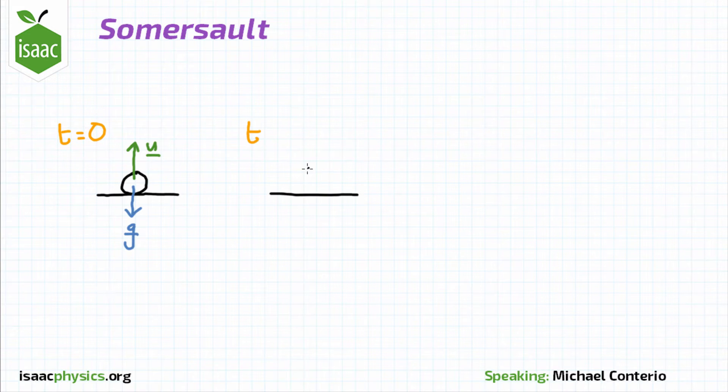At a later time t, the gymnast lands with a downwards velocity of v and still with an acceleration due to gravity downwards of g.